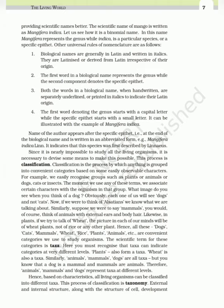The universal rules of nomenclature are as follows: (1) Biological names are generally in Latin and written in italics, or Latinized irrespective of their origin. (2) The first word in a biological name represents the genus while the second component denotes the specific epithet. (3) Both words, when handwritten, are separately underlined, or printed in italics to indicate their Latin origin. (4) The first word denoting the genus starts with a capital letter while the specific epithet starts with a small letter — as illustrated by Mangifera indica. The name of the author appears after the specific epithet in abbreviated form, e.g., Mangifera indica Linn., indicating this species was first described by Linnaeus.